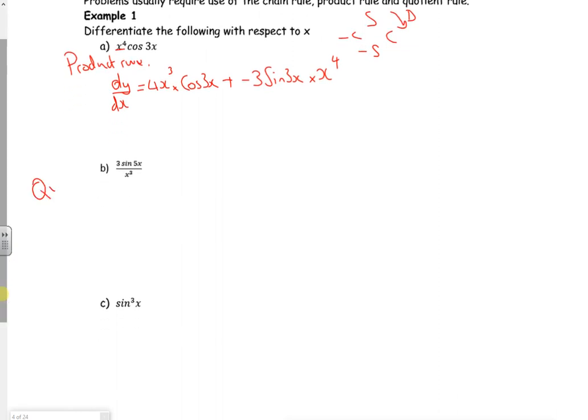Right, let's have a look at b. So b is a quotient rule one. Quotient. So let's have a look then. So f of x is 3 sine 5x. So f dashed of x is 3 times by - sine goes to cos. But the 5, this gives me 5 cos 5x. So that's 15 cos 5x. G of x is x cubed, isn't it? So g dashed of x is 3x squared.